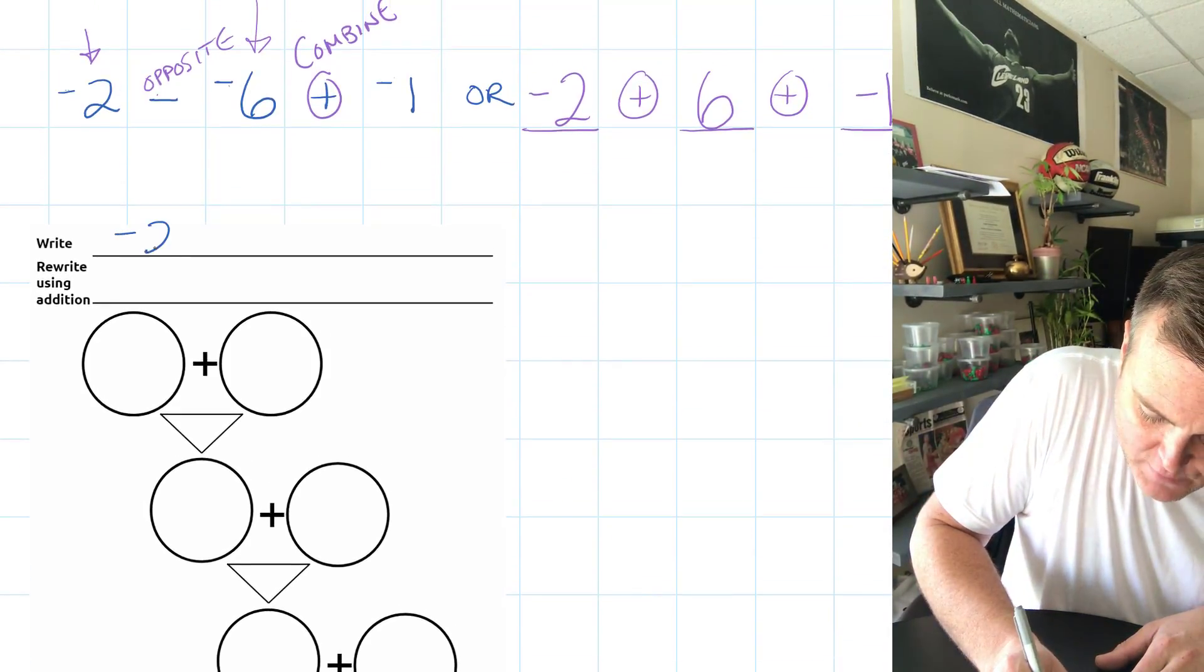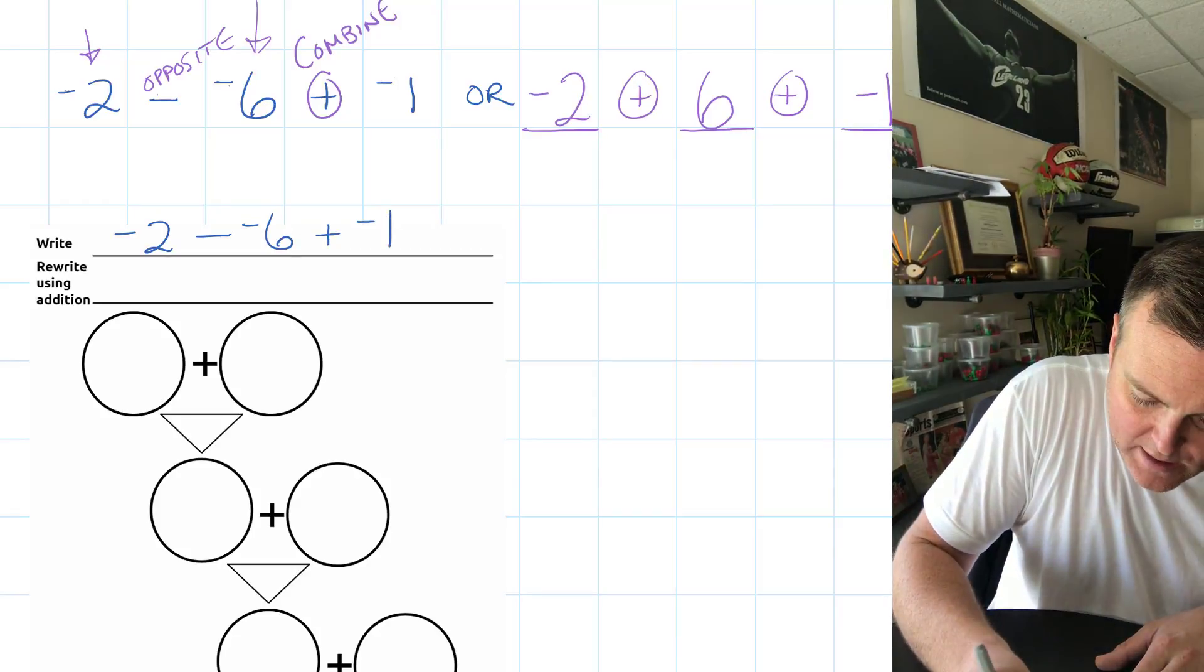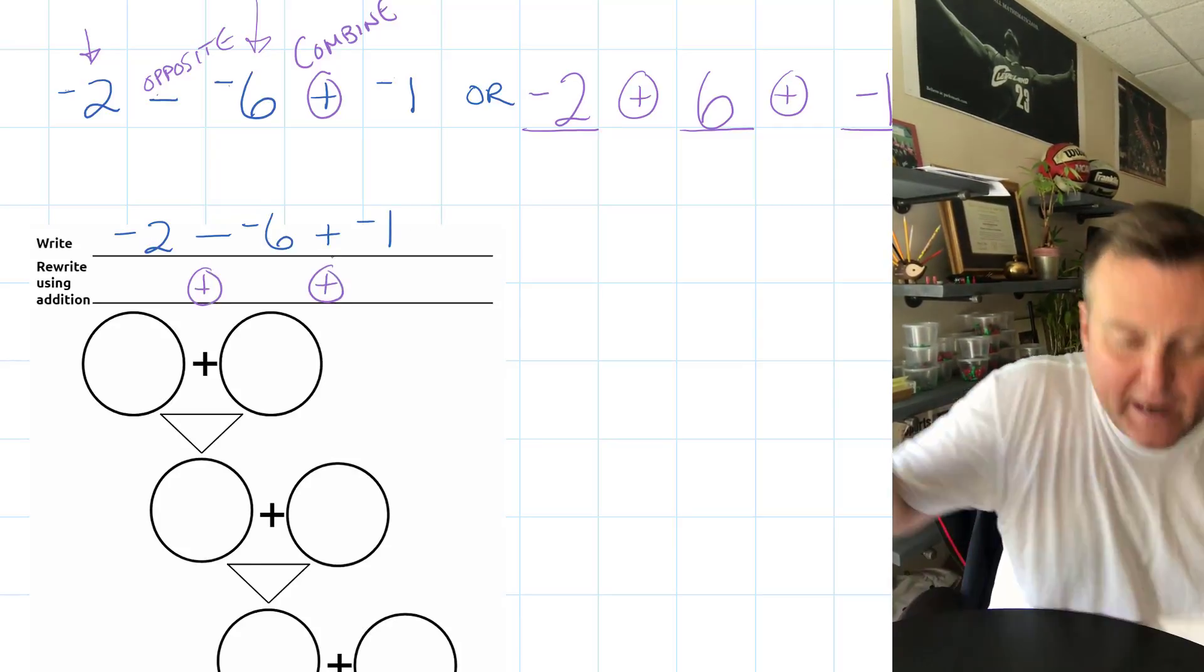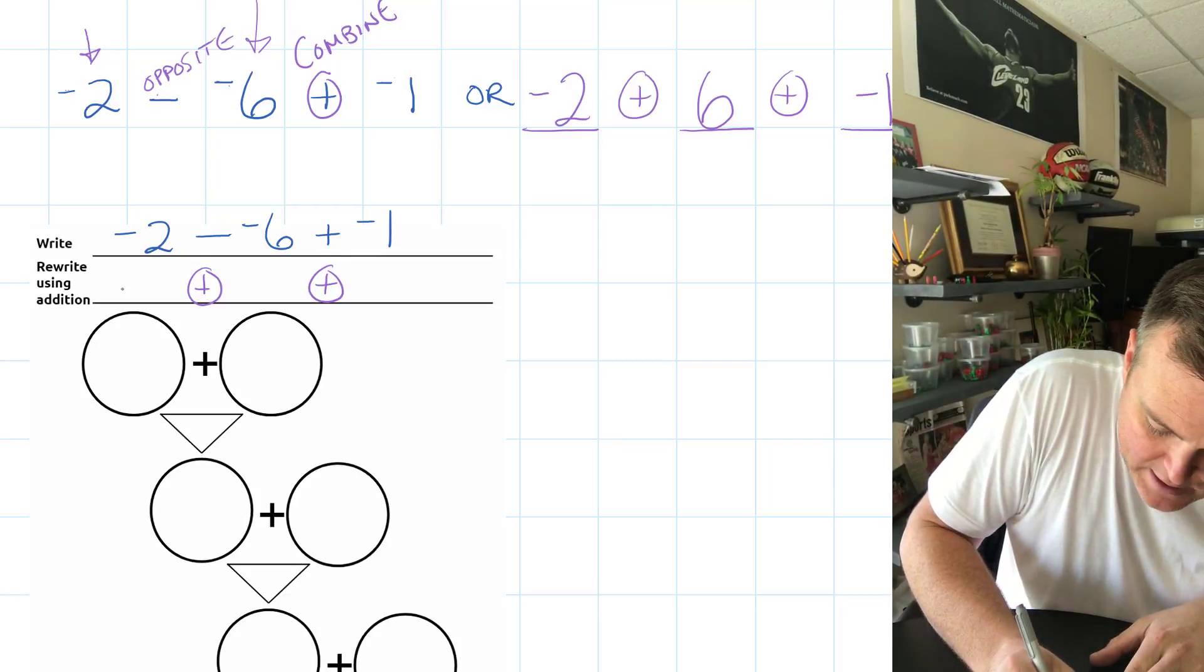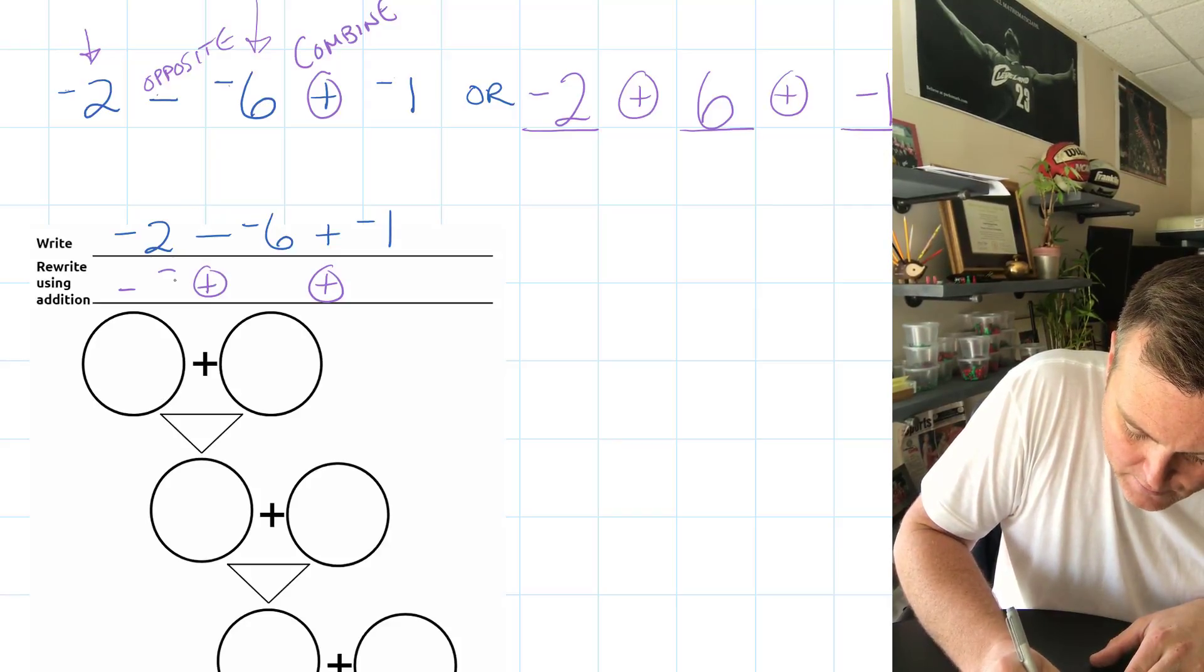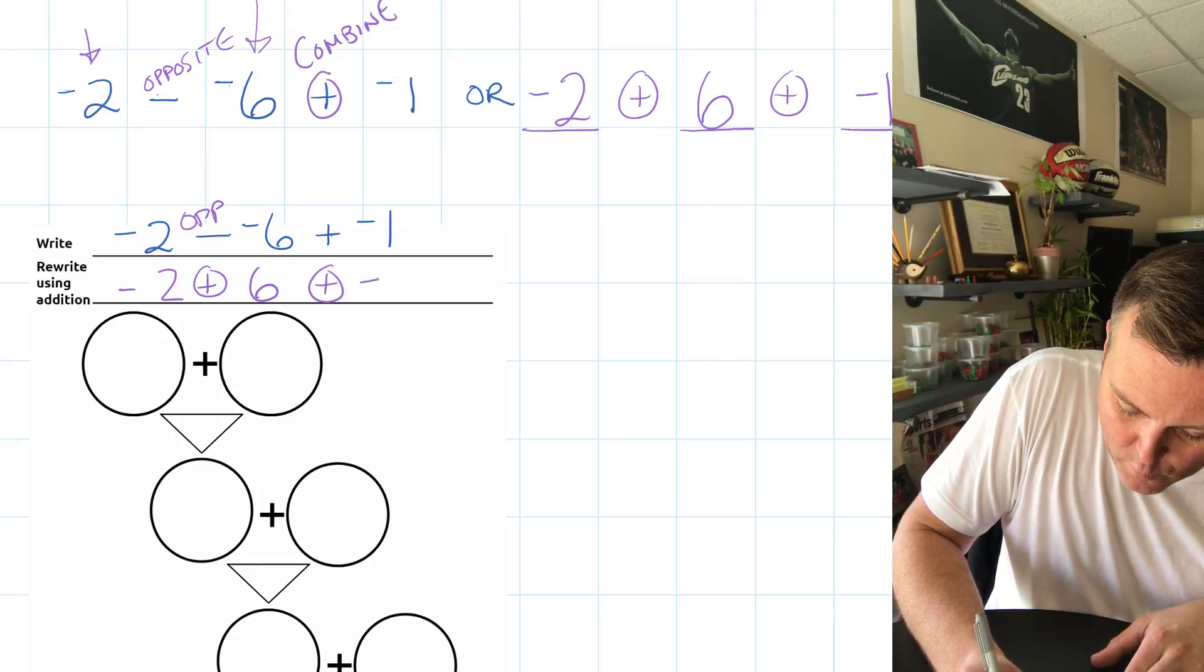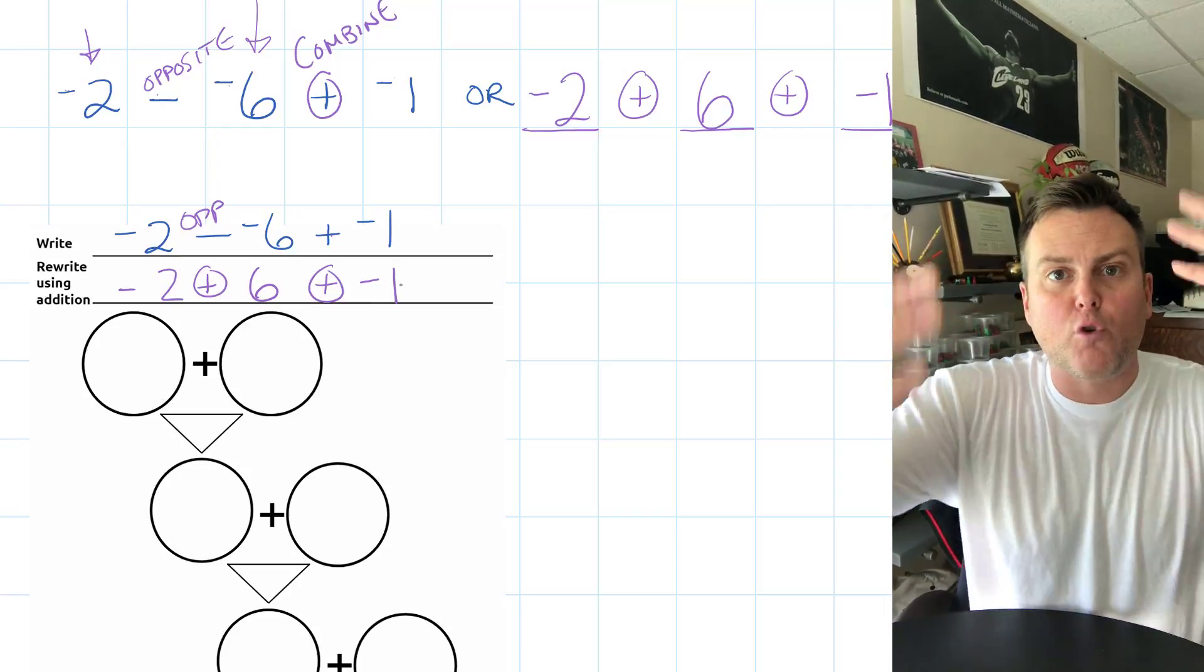The question I just gave you was -2 - (-6) + (-1). When we rewrite this using addition, I've got one, two, three, so I've got to separate these three numbers with our combining plus sign and figure out what the number is. Negative two stays. The opposite of -6 is positive six, and we are combining -1.